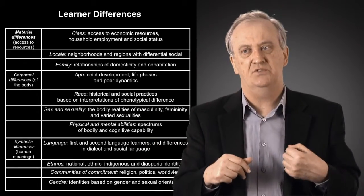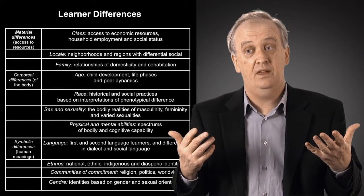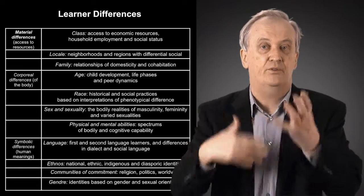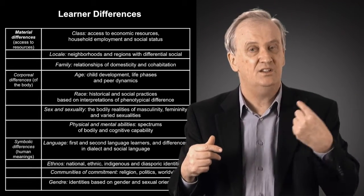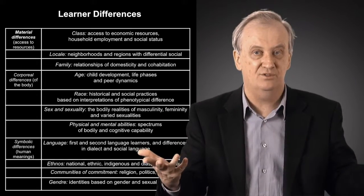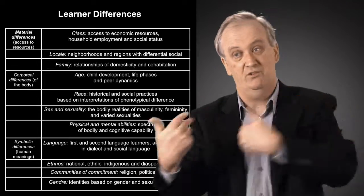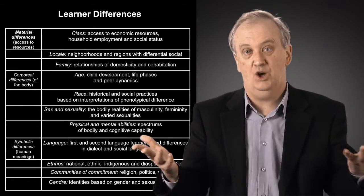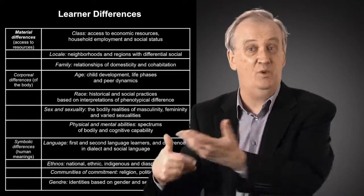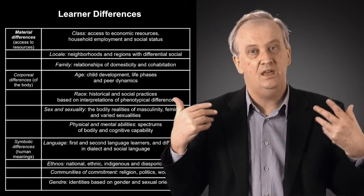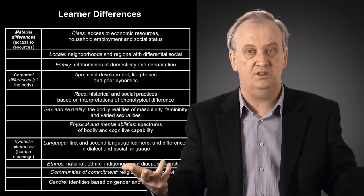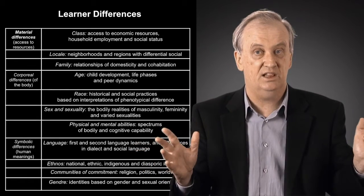Let's take material differences first. Within that macro category I've got three subcategories. The first one is social class, and class is simply about access to economic resources — whether you're rich or poor, whether you're a boss or a worker, whether you're a professional person, a blue-collar worker, or unemployed. In the societies we live in, there are deep fissures of inequality which can be described around this category of class.